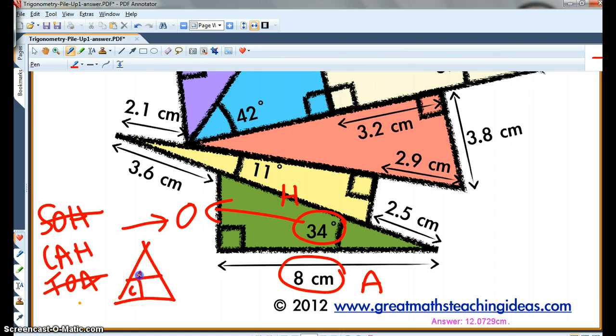we drew our little triangle, like so. And so we know that we're trying to find a hypotenuse. So we go h equals a over cos theta. So a is 8 and cos 34.